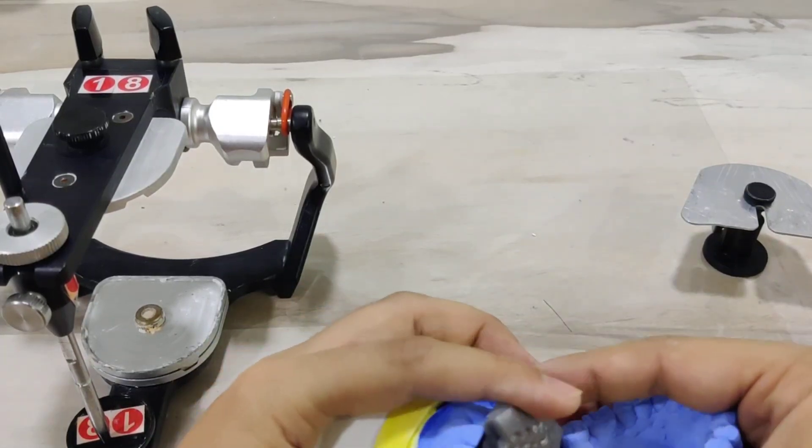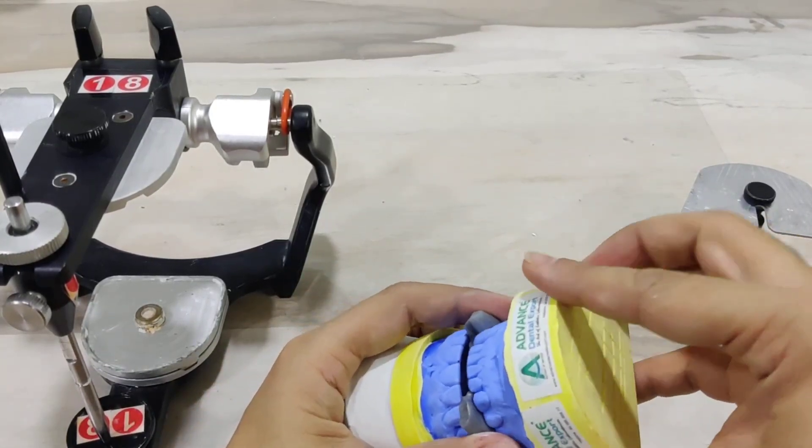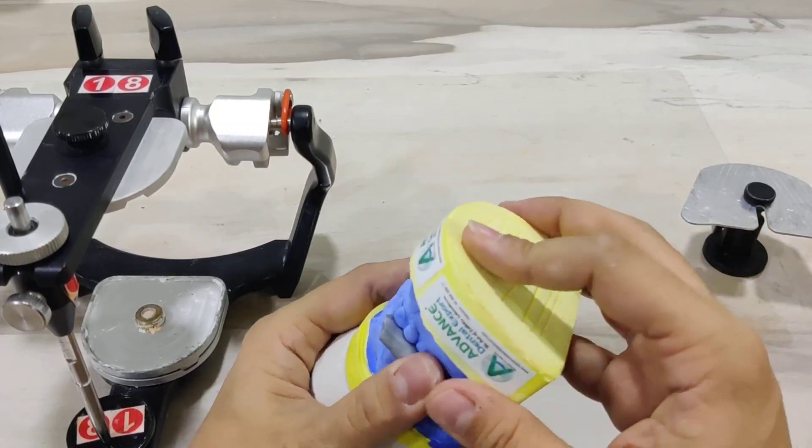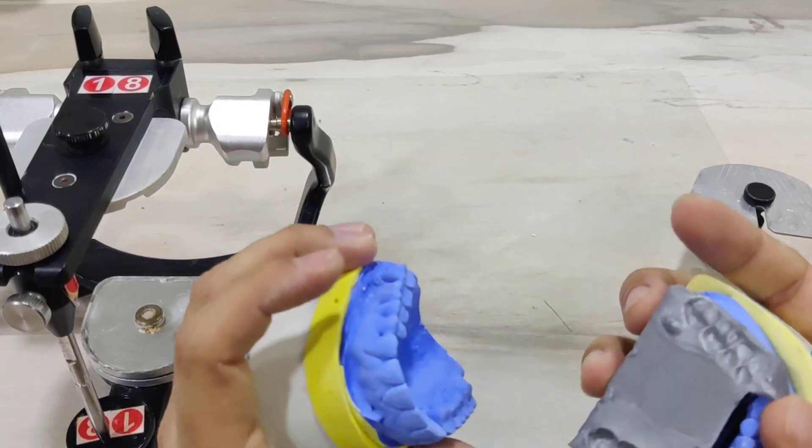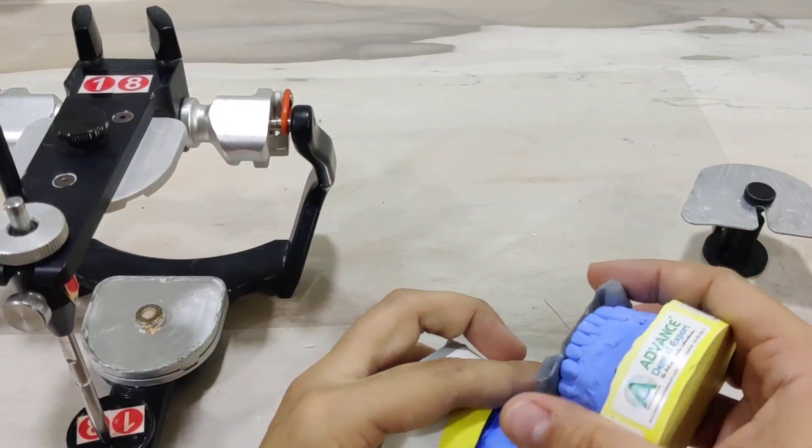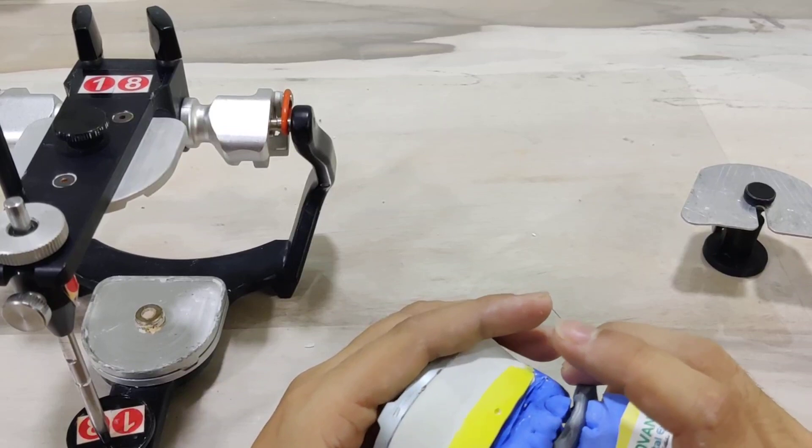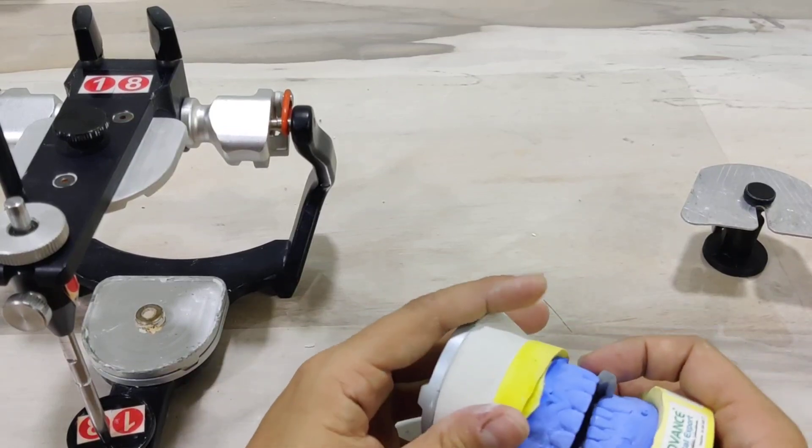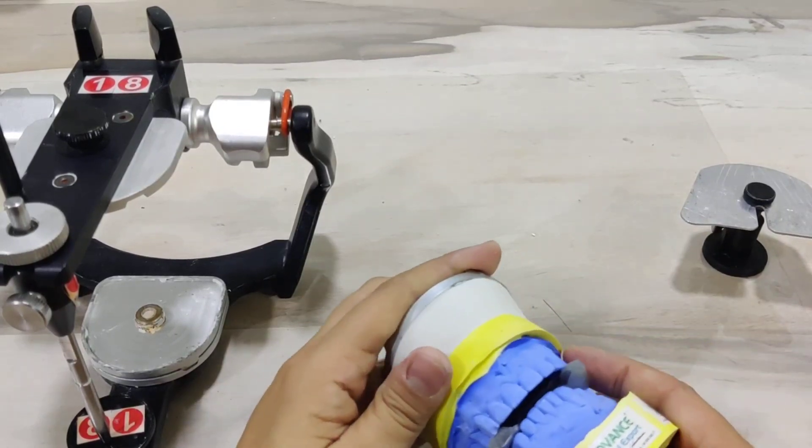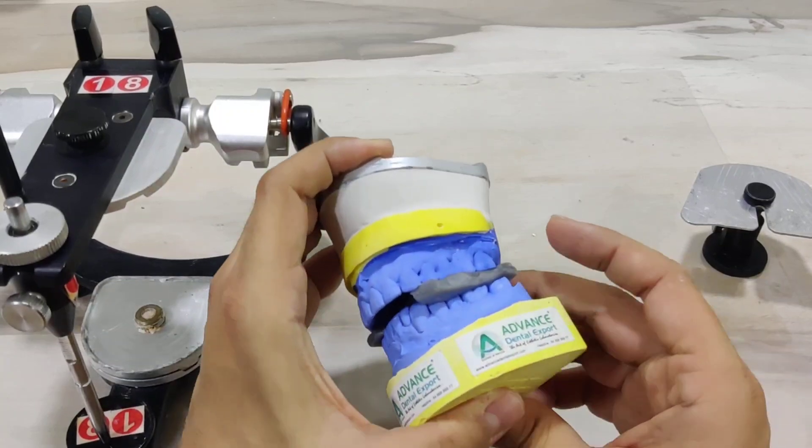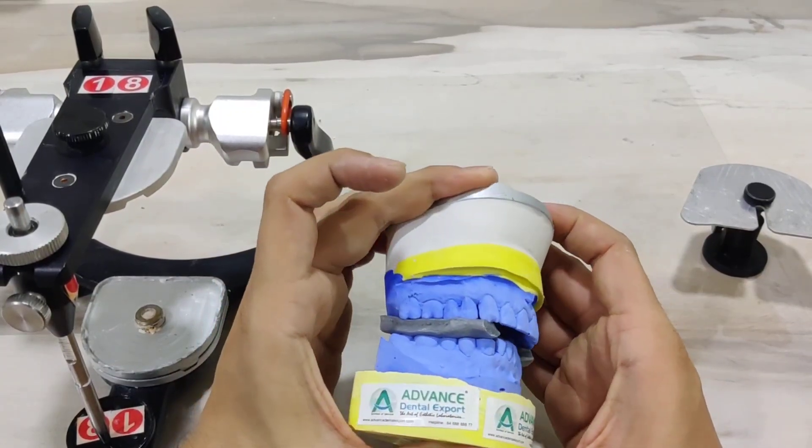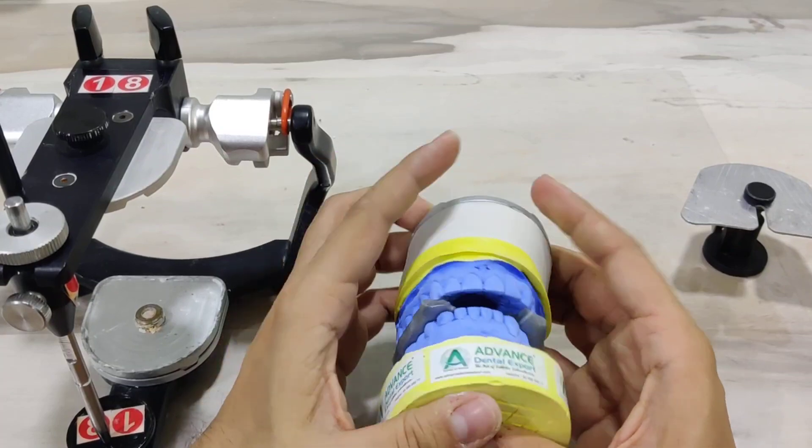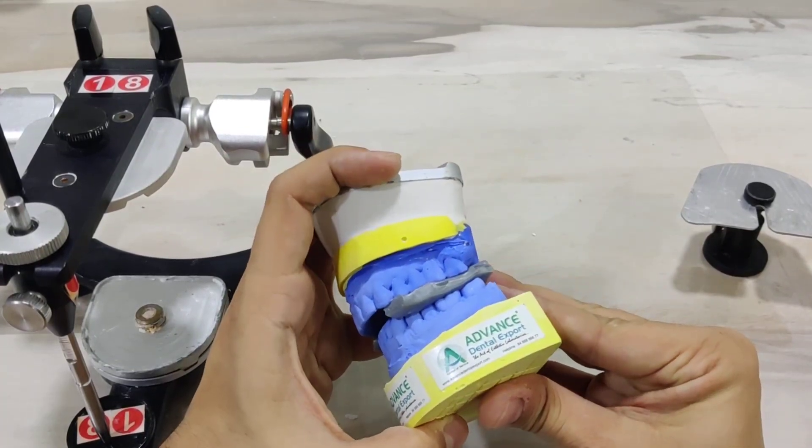I adapt the mandibular cast onto the lower side. It's extremely important that these are completely stable and seated with respect to each other. If they are not stable, your entire mounting will go wrong. Please take time to stabilize these. As you can see, the upper and the lower member fit into each other perfectly. At the time of mounting, it is very common for the lower member to slightly open up from its position.